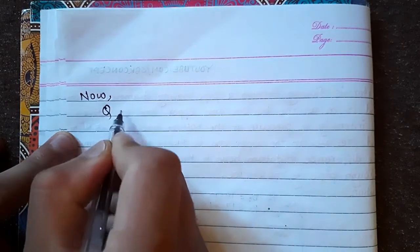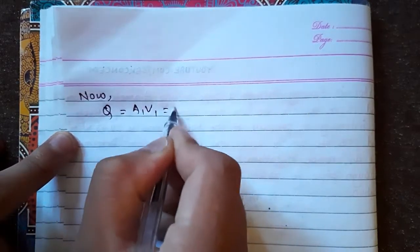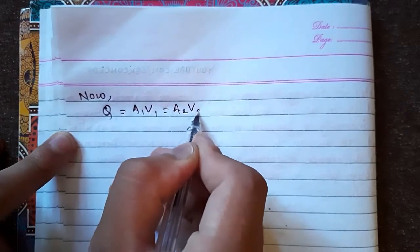Now Q discharge area into velocity. A₁V₁ equals to A₂V₂.